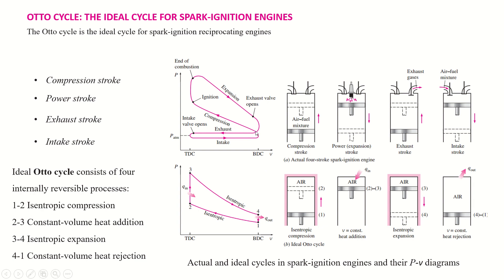In the compression stroke on the PV diagram, volume is decreasing as the piston moves up, while pressure is increasing. This line up to here represents the compression stroke.